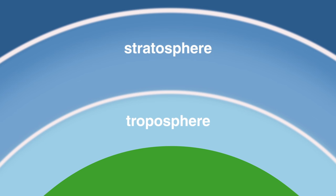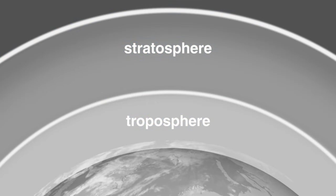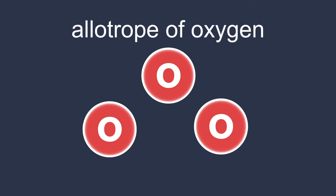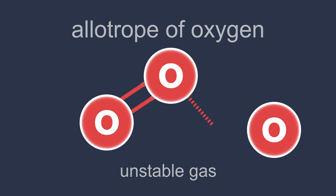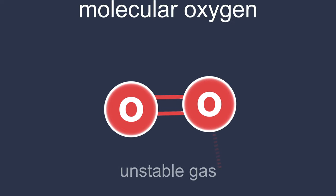So where does this good stratospheric ozone come from? Pause the video and think of the formula of ozone. Well, ozone is an allotrope of oxygen. Its molecules are made of three oxygen atoms bonded weakly together. It is an unstable gas which slowly decomposes back to molecular oxygen.